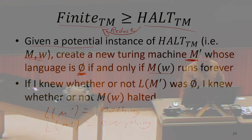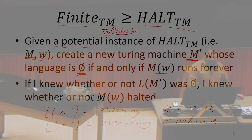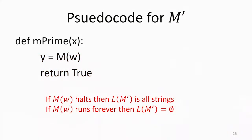Notice that when it's nothing, the empty language is finite — it has finitely many things in it, namely zero. The everything language is infinite because it contains all infinitely many bit strings. So if we knew whether the language was finite, we'd know whether it was nothing — and therefore we could tell you if M halted on W. Let's see how this works with some pseudocode.